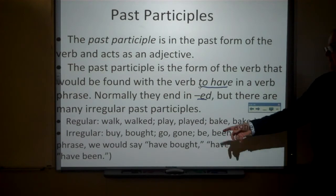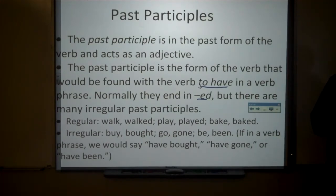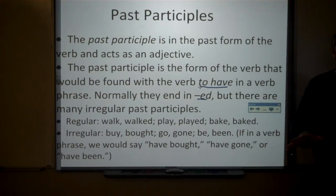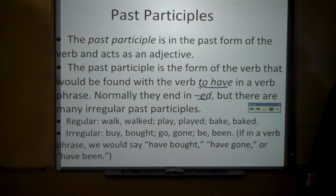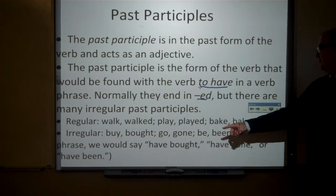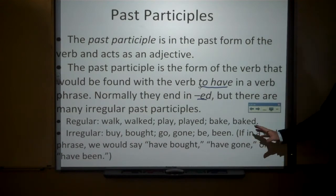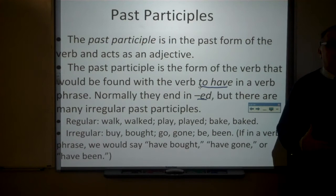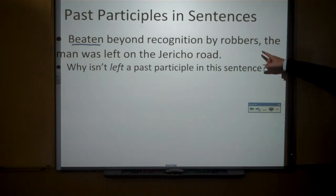In the first two cases you add ED; with bake, you just add a D. Sometimes, like hop becomes hopped or stop becomes stopped, you double the final consonant before adding ED. But we know in English there are numerous irregular past participles: the past participle of buy is bought, go is gone, be is been. We would say have bought, have gone, or have been if using them in a verb phrase.